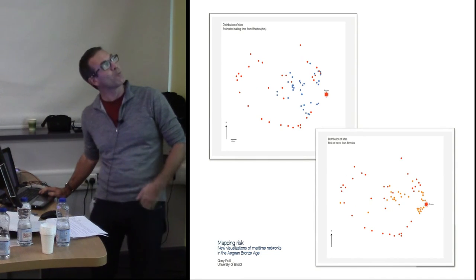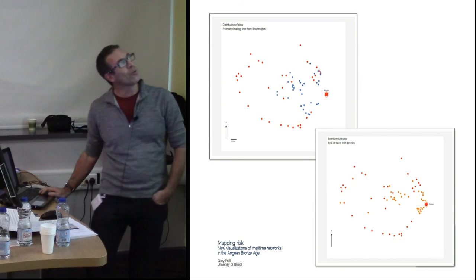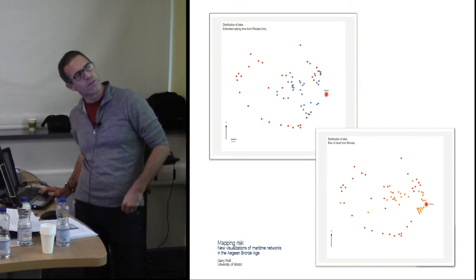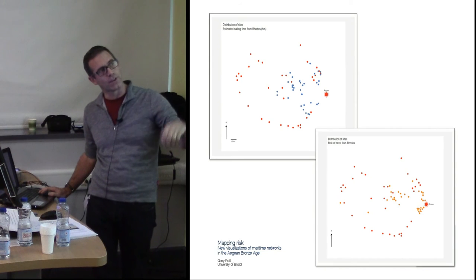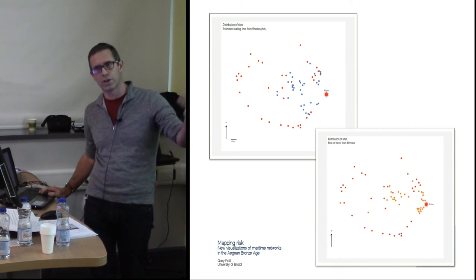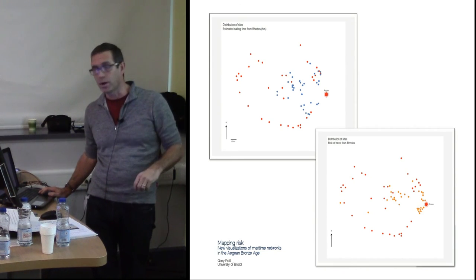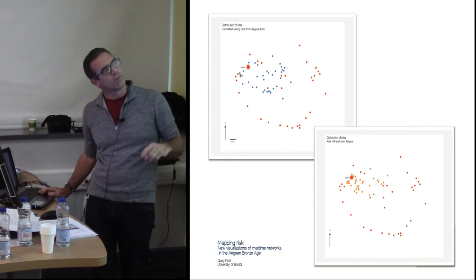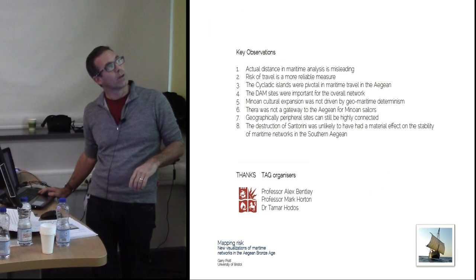For Rhodes, similarly, the Cretan islands shift very close to Crete. I would say the Dodecanese islands are pivotal in this network, and Aegina, though on the periphery geographically, is actually an important node in the network.